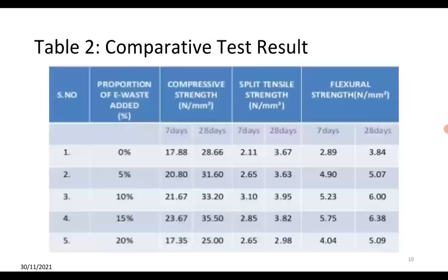This table shows comparative test results for compressive strength, split tensile strength, and flexural strength at different proportions of e-waste added — that is, 0%, 5%, 10%, 15%, and 20%. You can see the results in the table.